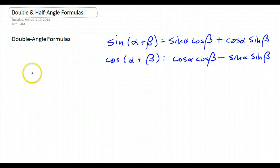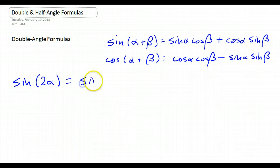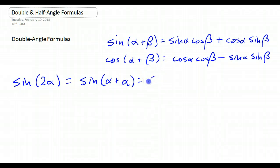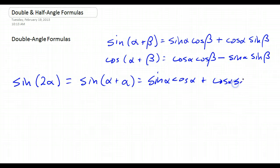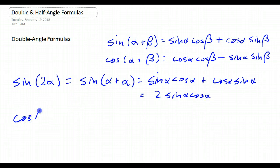So how do we get the double angle formulas? What would be the sine of 2 alpha? We just rewrite that as the sine of alpha plus alpha and follow the angle addition pattern. It's going to be sine alpha cosine alpha plus cosine alpha sine alpha, and that works out to 2 sine alpha cosine alpha.